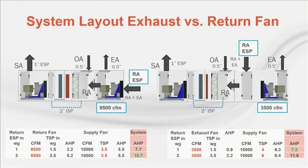At higher static of 3 inches, the air horsepower removed from the supply fan by the return fan is more than the air horsepower added to the return fan. Thus, the return fan system uses less air horsepower than an exhaust fan.